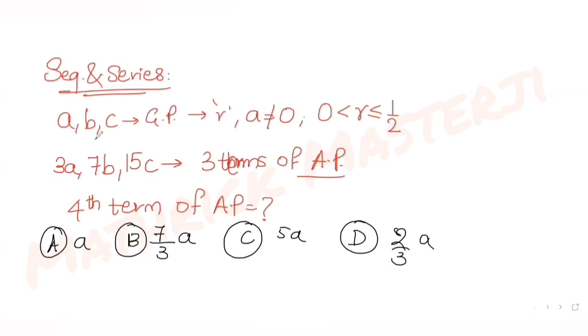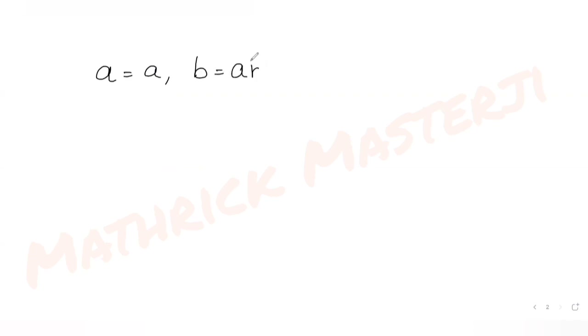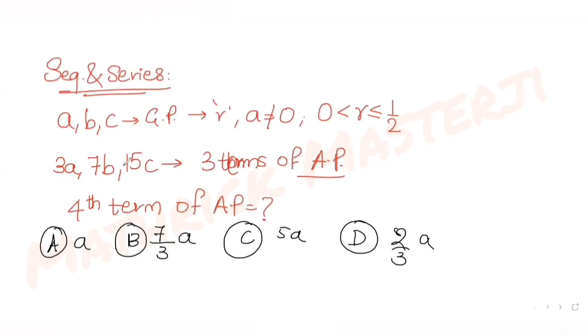First, we were told that a, b, c are in geometric progression. If the first term is a, then the second term b equals a times r, where r is the common ratio. For c, we multiply the previous term ar by r again, giving us c equals ar².